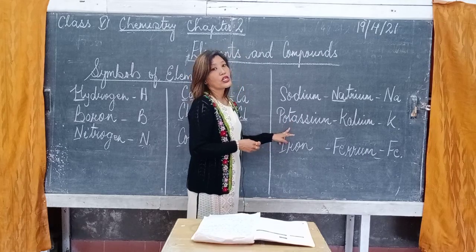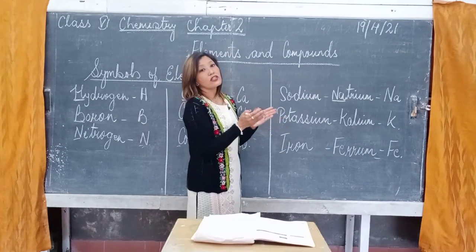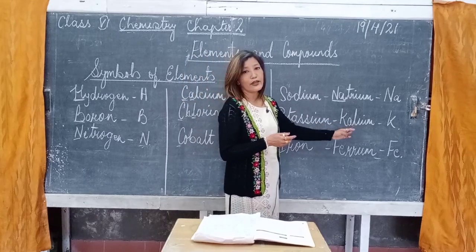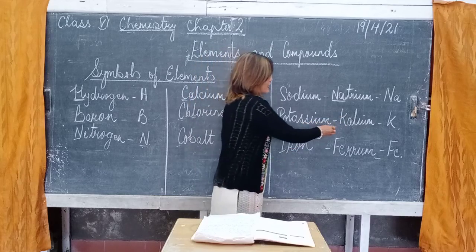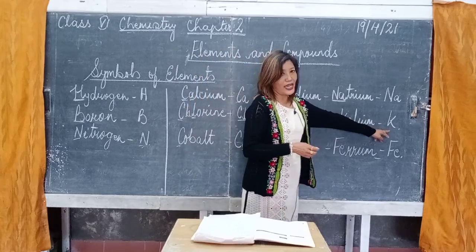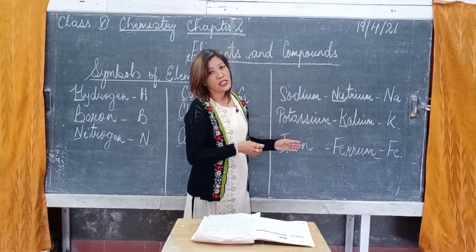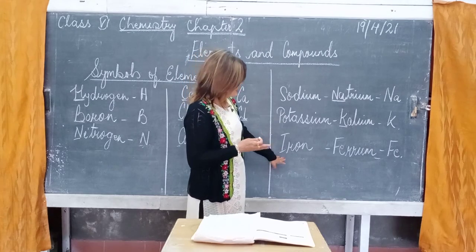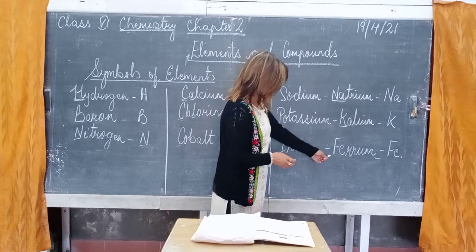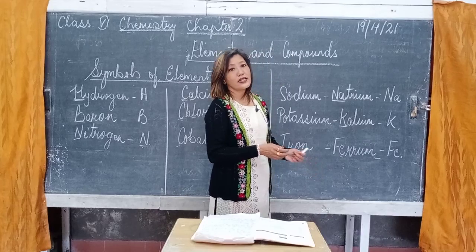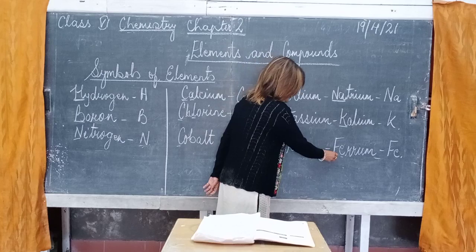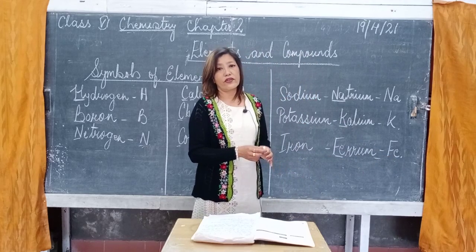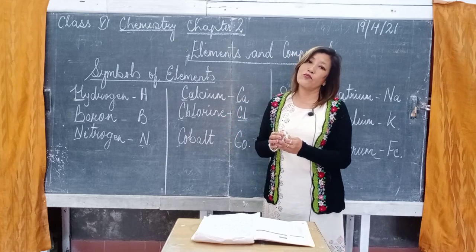The next example is potassium. The first letter is P, but potassium is also derived from the Latin name kalium. So the symbol of potassium is K, taken from its Latin name. Then there is iron — its Latin name is ferrum, where F is the first letter and E is the second. So the symbol of iron is Fe. These are the three rules to remember when writing symbols of elements.